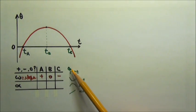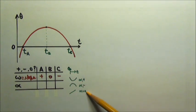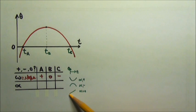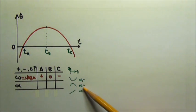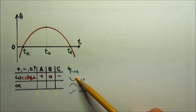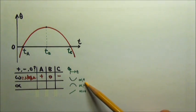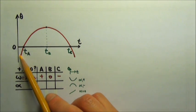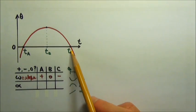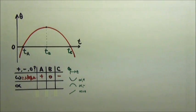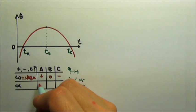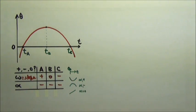For an angular position as a function of time graph, if the graph is a straight line there is no angular acceleration because the slope — the angular velocity — is constant. If it is a downward curve, the angular acceleration is negative. If it is an upward curve, the angular acceleration is positive. This entire graph is a downward curve, so the angular acceleration is negative for all of those moments.